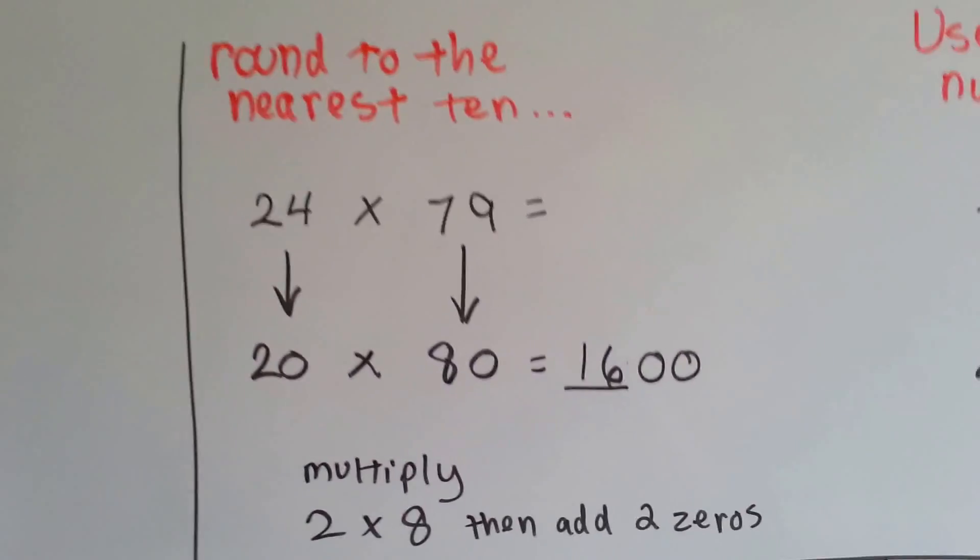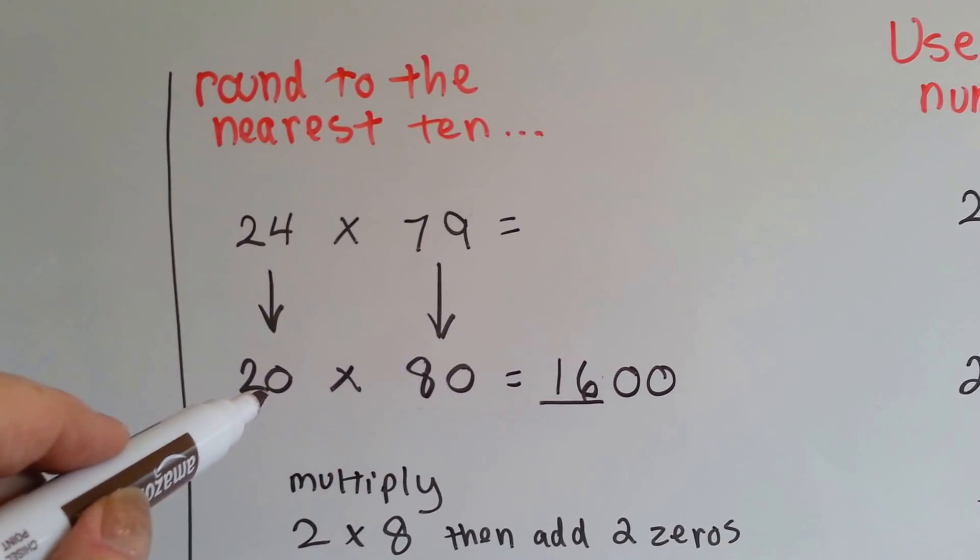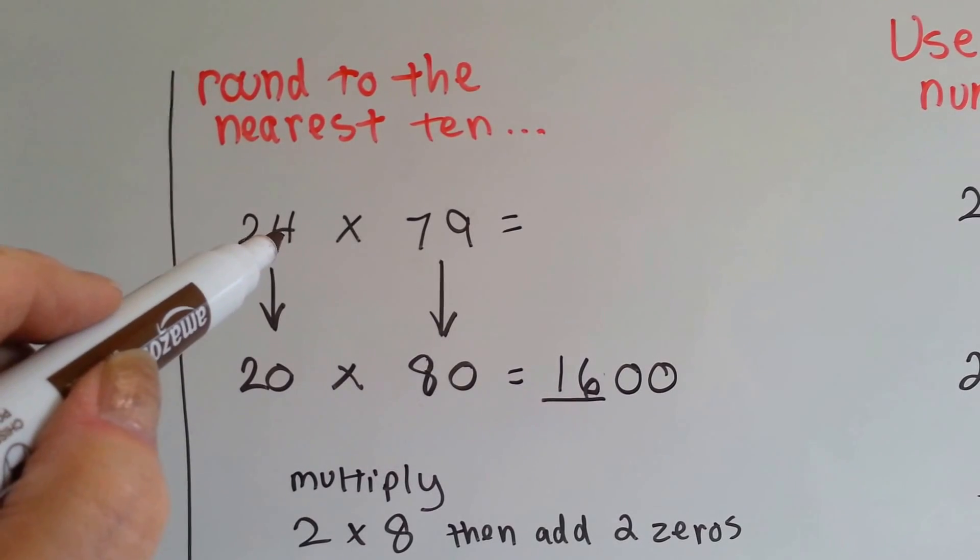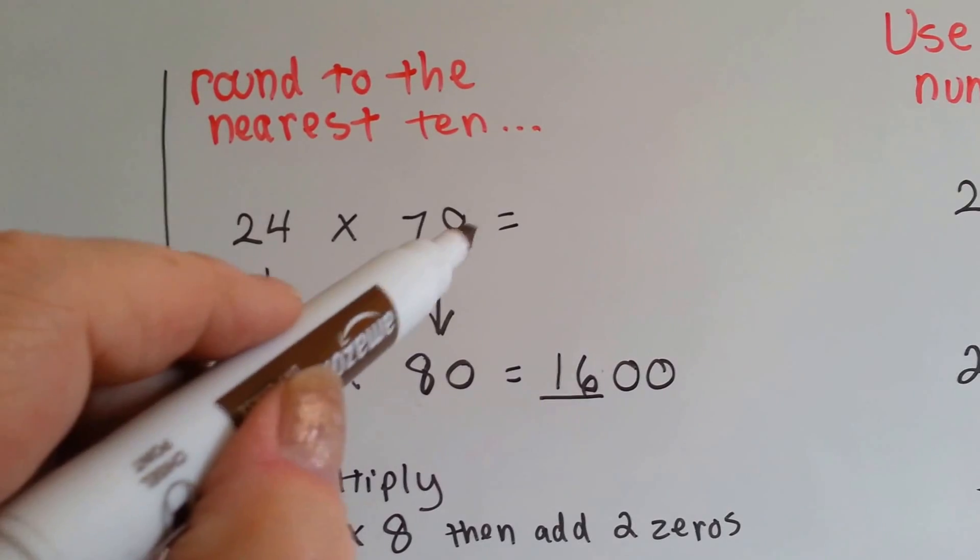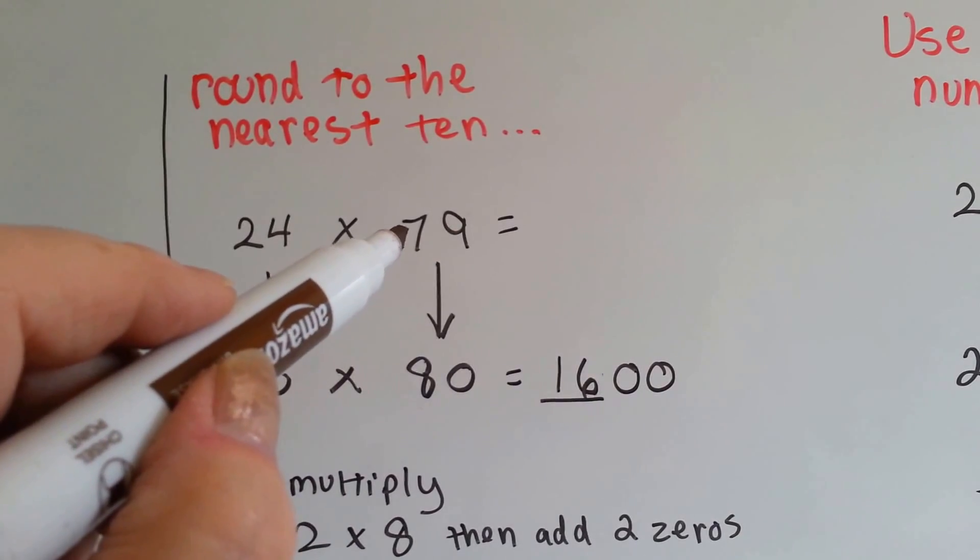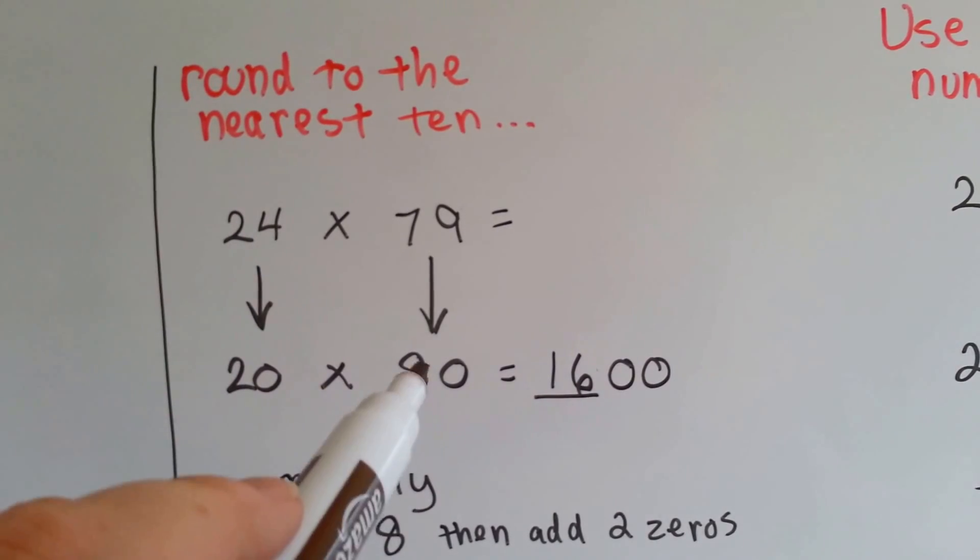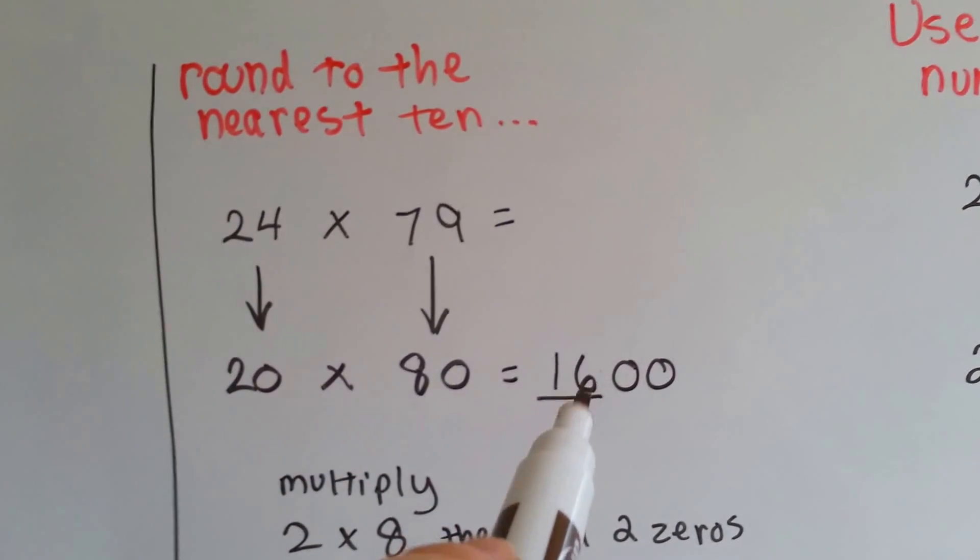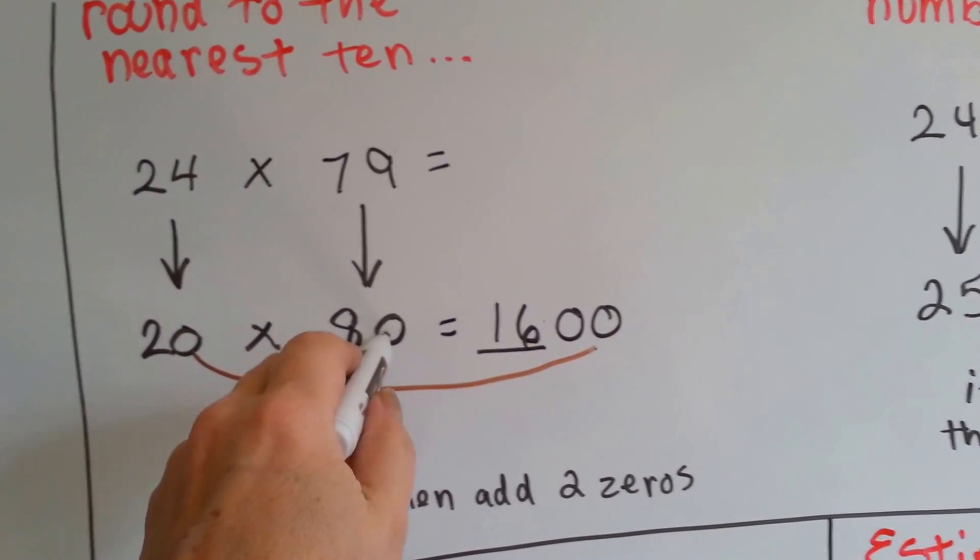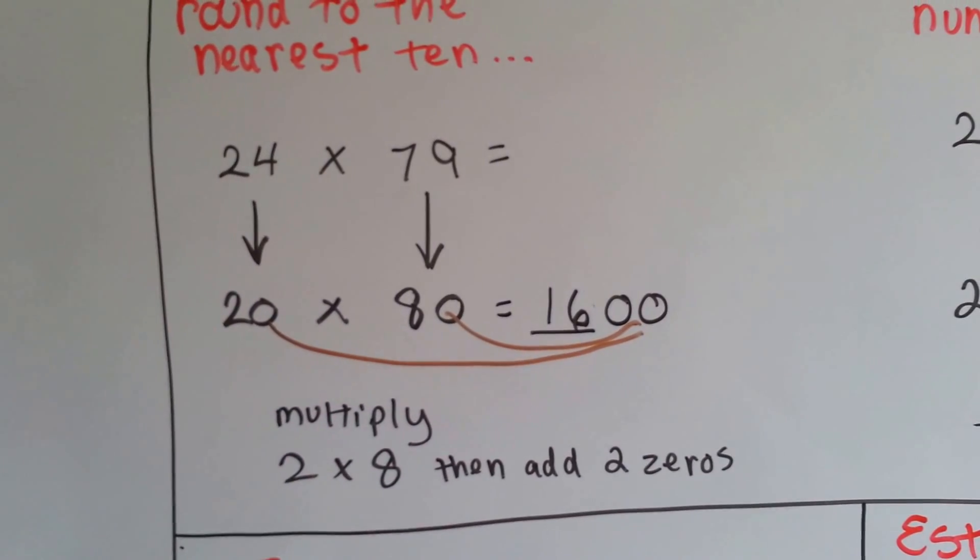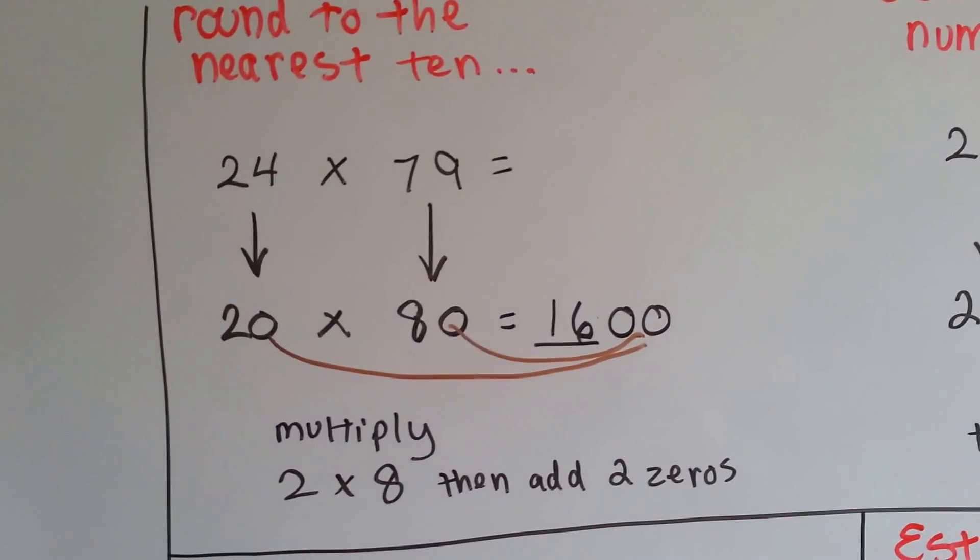How about round to the nearest ten? Twenty-four times seventy-nine. The twenty-four rounds to twenty, because the four tells the two to stay the same, and it turns into a zero when it's finished doing its job. And seventy-nine. The nine tells the seven to go up to an eight, and then it turns into a zero when it's finished. So, now we've got twenty times eighty. Two times eight is sixteen, and then we add the zero from the twenty and the eighty, and we get sixteen hundred. We multiply the two and the eight, and then add the two zeros.